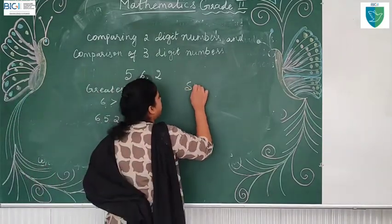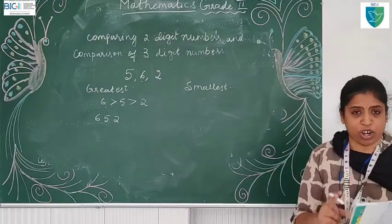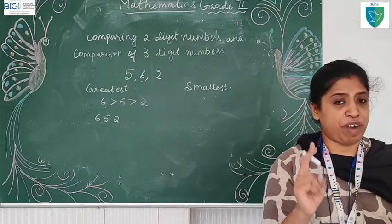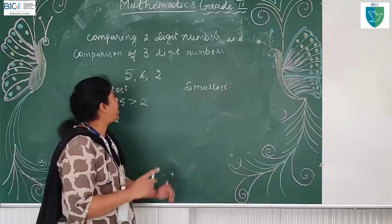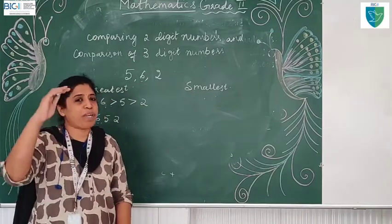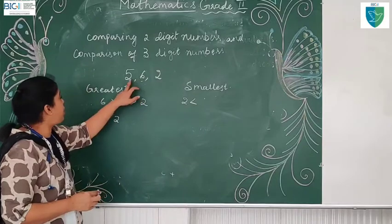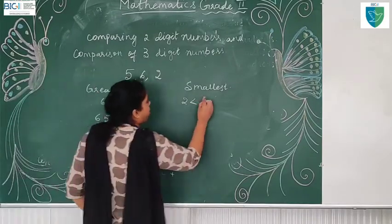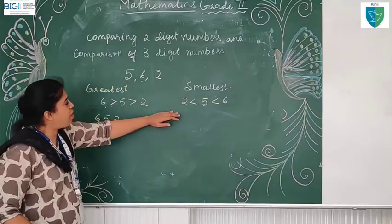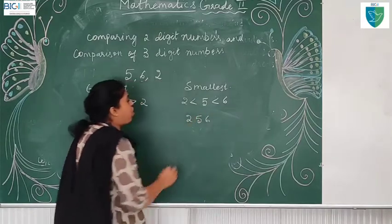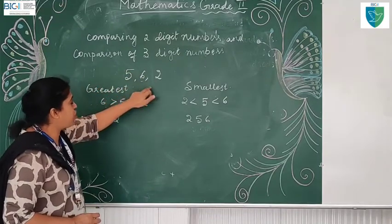Now for the smallest number, we have to arrange in ascending order, starting with the hundreds place. Two is less than five, less than six. For ascending order — small number to bigger number — which is smallest? Two. Then the next bigger number is five. Then the biggest is six. So the smallest number is two hundred and fifty six.